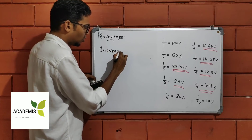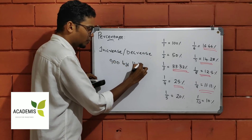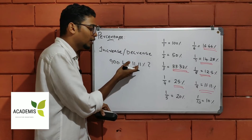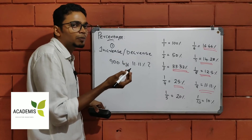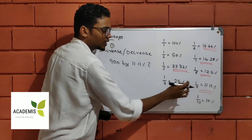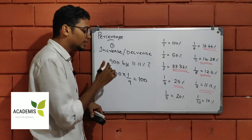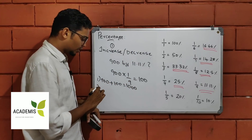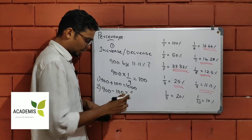Increase or decrease — 900 by 11.11%. If we have an increase or decrease of 11.11%, that value corresponds to 1 by 9. So 900 by 11.11% means we calculate 900 divided by 9, which equals 100.